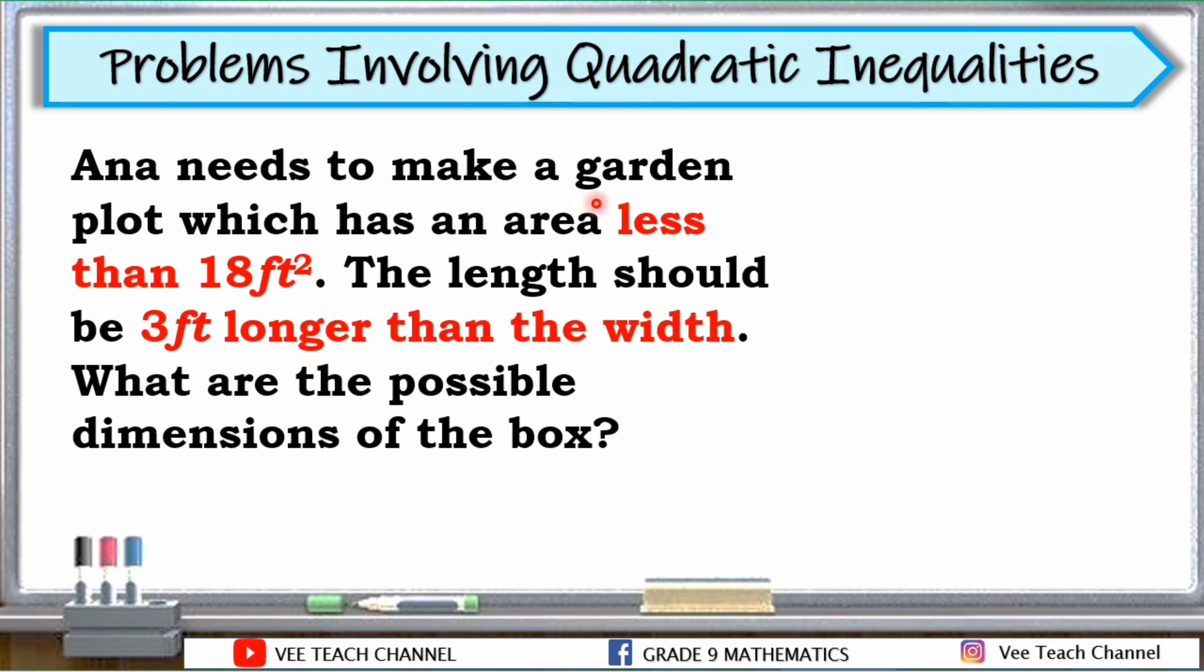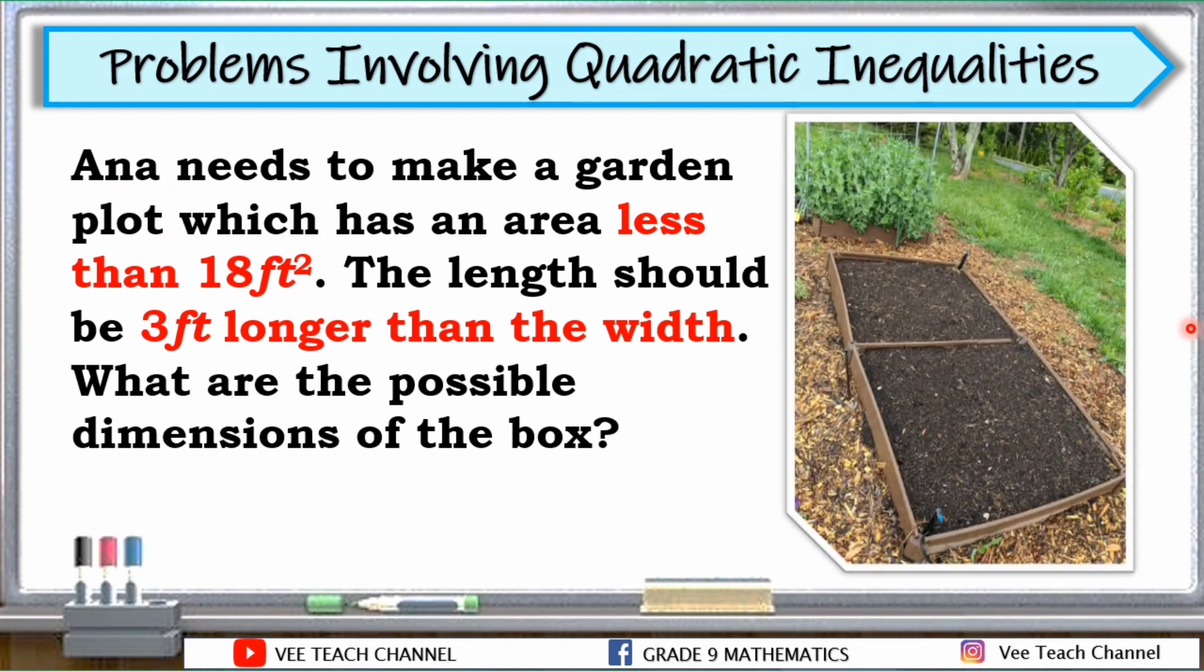Let's analyze and understand the problem. As you can see here, si Ana nga daw ay gagawa ng kanyang garden plot. Ano ba yung garden plot? Ito yun. So diba dyan tayo nagtatanim. And then sabi dito sa problem natin, yung kanyang garden plot o area ng kanyang garden plot is less than 18 feet squared. Aside from it, yung kanyang length ay 3 feet longer than the width. Ibig sabihin yung mas mahaba sa width ng tatlong feet yung length compared sa width. At ang kailangan nating alamin or kailangan nating ma-solve dito ay yung dimensions nung garden plot o nung box natin. Again, hahanapin natin yung sukat, possible dimensions or possible length and width of our box. And remember the given. Ang given natin dito is yung area less than 18 feet squared tapos yung length na 3 feet longer than the width.